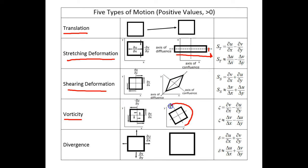Vorticity, which spins the air parcel, and divergence, which grows the air parcel.